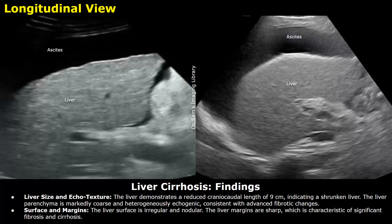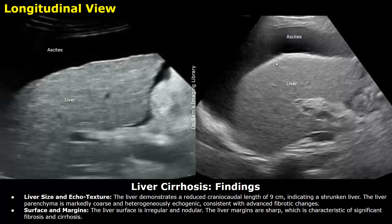These are the findings. Liver size and echo texture: the liver demonstrates a reduced craniocaudal length of 9 centimeters, indicating a shrunken liver. The liver parenchyma is markedly coarse and heterogeneously echogenic, consistent with advanced fibrotic changes. Surface and margins: the liver surface is irregular and nodular; the liver margins are sharp, which is characteristic of significant fibrosis and cirrhosis.